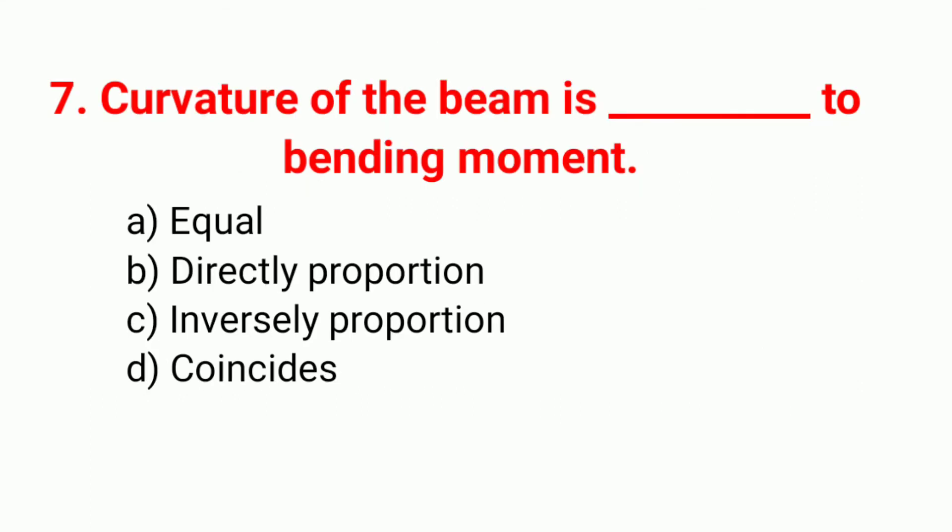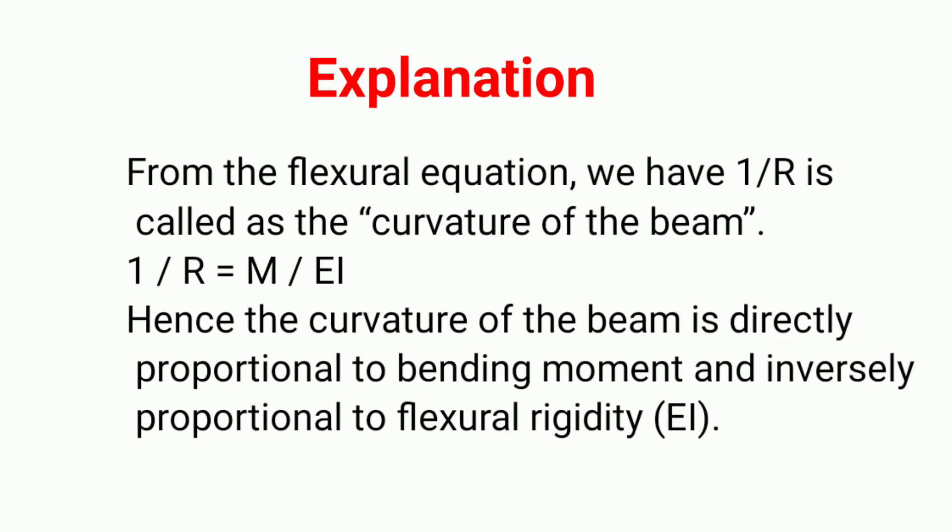Question 7: Curvature of the beam is dash to bending moment. Your right answer is option B, directly proportional. Explanation: from the flexure equation, curvature is 1/R = M/EI. Hence the curvature of the beam is directly proportional to the bending moment and inversely proportional to the flexural rigidity EI.